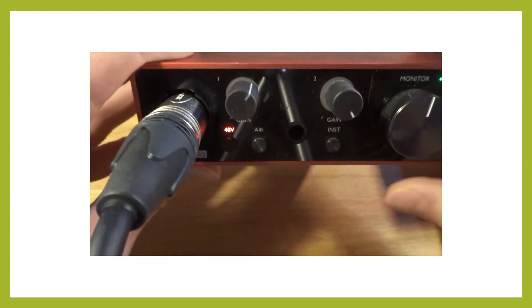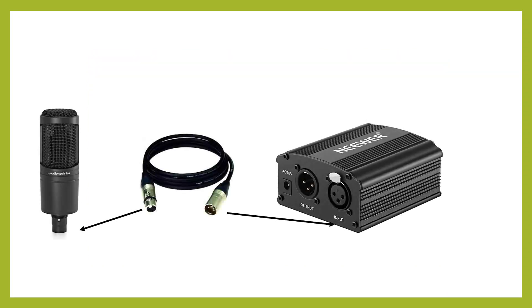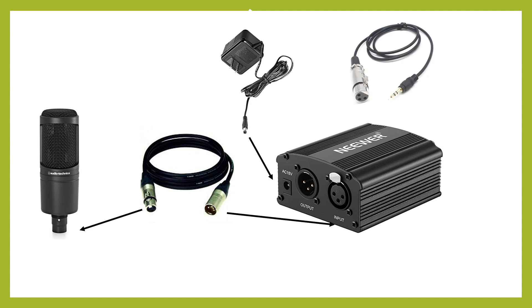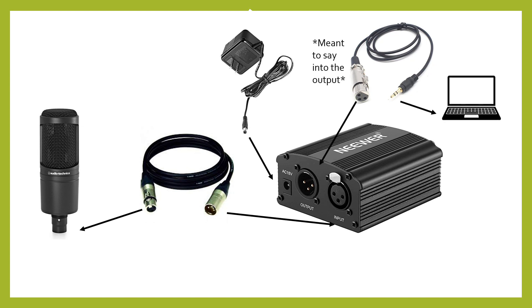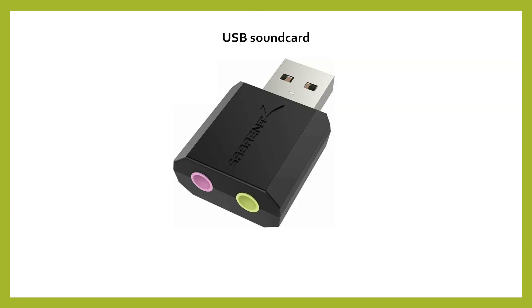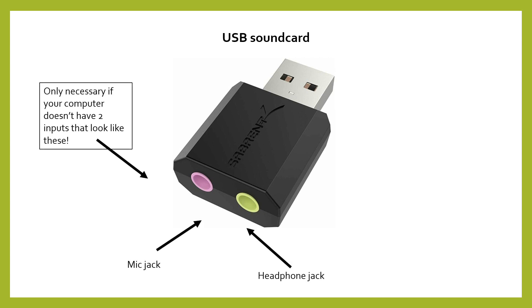If you do go for a power box, start by connecting an XLR to XLR cable from your mic to the input port on your power box. Connect the box to electricity with the power cable that came with it. You'll also need an XLR to 3.5 millimeter audio cable — plug the XLR end into the input jack on your power box and the aux end into the mic jack on your computer. If your computer doesn't have a mic jack, you'll need to get a simple USB sound card that allows you to plug in a mic and headphones. Now make sure your power box is turned on and you're ready to go.